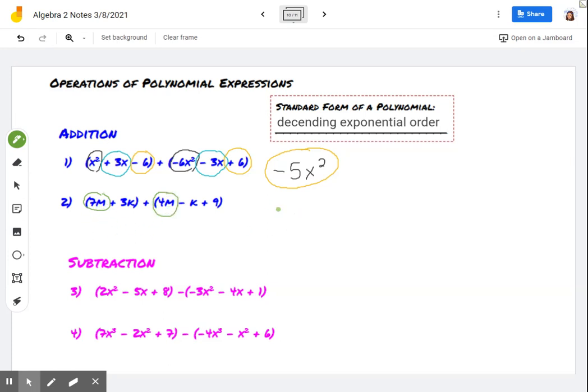Here, if I combine my like terms, I'm going to have 11m. For my k terms, I have 3k plus a negative 1k. Remember, we could put the little 1 there if you want to is plus 2k. And then it looks like I only have one constant term. So that's easy to combine with itself.